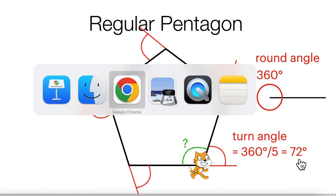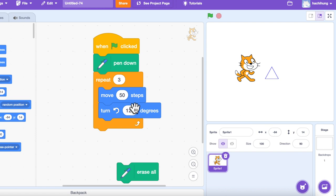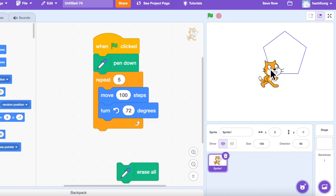Now we can go back to Scratch and draw this polygon. So suppose we change back to move 100 steps. And this time, we set the turn angle to be 72 degrees. And we are going to repeat this for five times. Okay, let's draw this. Ah, we got a perfect pentagon.